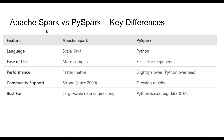Now let's look at the differences between Apache Spark and PySpark. In terms of language, Apache Spark is primarily written in Scala and supports Java, while PySpark is the Python API for Spark. For ease of use, Apache Spark with Scala and Java requires more setup and verbosity, whereas PySpark is easier for beginners as Python is more user friendly. Regarding performance, native Apache Spark in Scala is faster as it runs directly on the JVM, while PySpark is slightly slower due to Python overhead, though it still runs Spark under the hood.